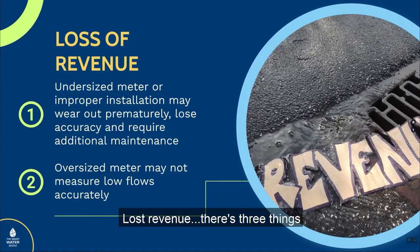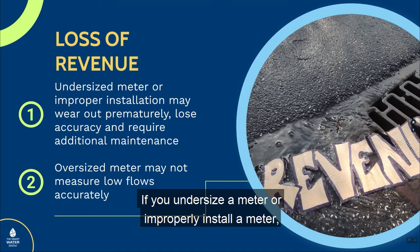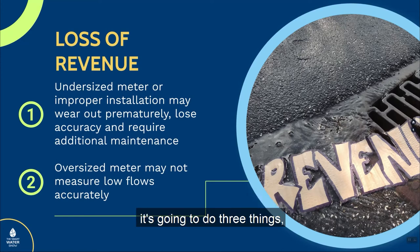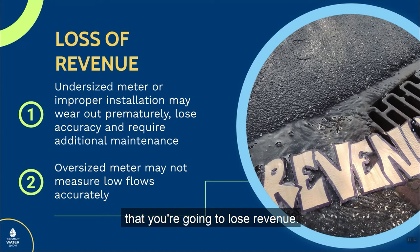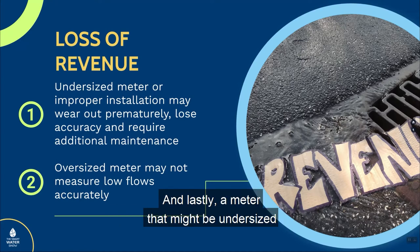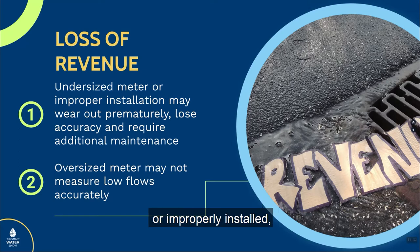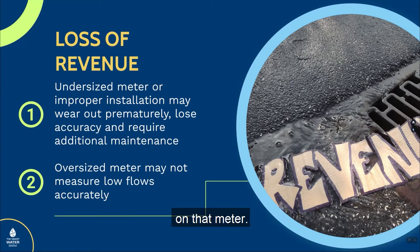Loss of revenue. There are three things that you can do wrong related to the loss of revenue. If you undersize a meter or improperly install a meter, it's going to do three things. It could potentially prematurely wear out. When it prematurely wears out, you're going to lose accuracy, meaning that you're going to lose revenue. And lastly, a meter that might be undersized or improperly installed is going to cause you additional maintenance work on that meter.